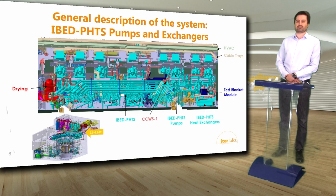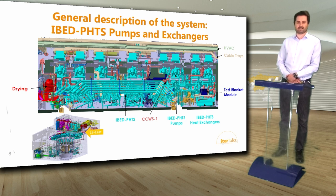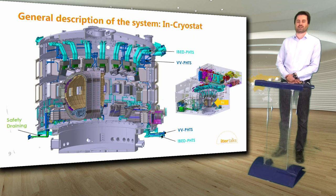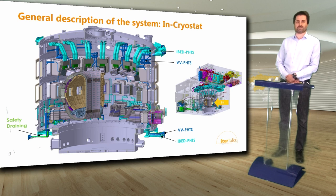At level L4 in the vault of the tokamak building, we have the main components of different subsystems: the NBI PHTS components, the chemical and volume control system components, and some IBED PHTS components. Notable here are the pressurizer, the volume control tank, and the pressure relief tank — visible in light blue — plus the main components of the drying system in red. At level L3 on the east side, we have the remaining main components of the IBED PHTS, notably the main heat exchangers and main pumps.